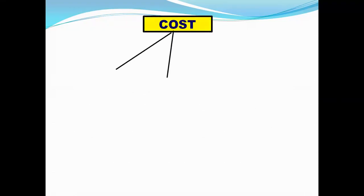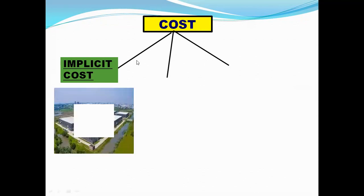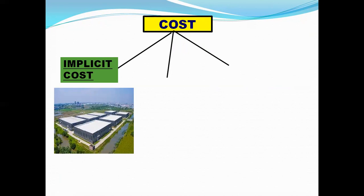There are three types of cost. First is implicit cost. There are some factors of production which a producer owns and uses in the production process — for example, land or personal capital which a producer invests. Such cost needs to be estimated because if the producer had rented out his land he would have got rent, but he is using it in production. So implicit cost is the estimated value of inputs owned by the firm and used by it in its own production unit.